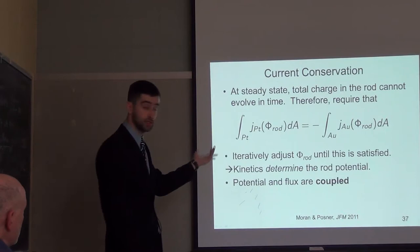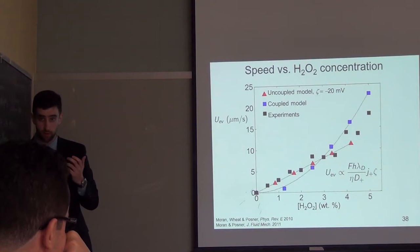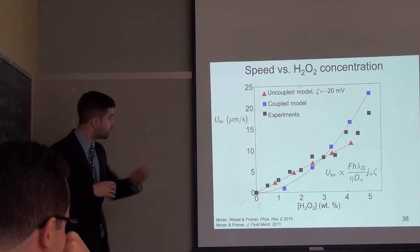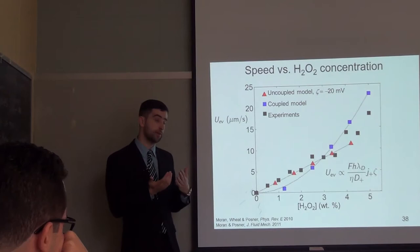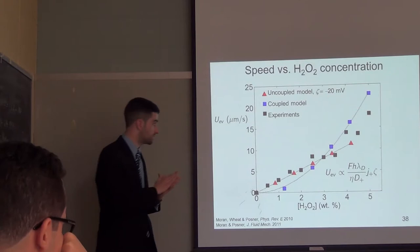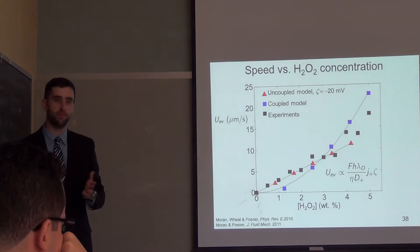Comparing the coupled model with the uncoupled model and experiments: red shows uncoupled data assuming a zeta potential of minus 20, blue is the coupled model, and black is experimental data. The quadratic shape for the blue data can be explained by the scaling analysis — the flux varies linearly with peroxide, and zeta potential also varies linearly with peroxide concentration, so multiplying those two effects gives the quadratic shape. However, while the model is more complicated, the agreement with experiments is not as good. Possible reasons include that rate constants might vary inversely with peroxide concentration, and we don't account for potential saturation of reaction sites at high concentration — in reality there are only a finite number of sites, so eventually the reaction rate and speed should level off.